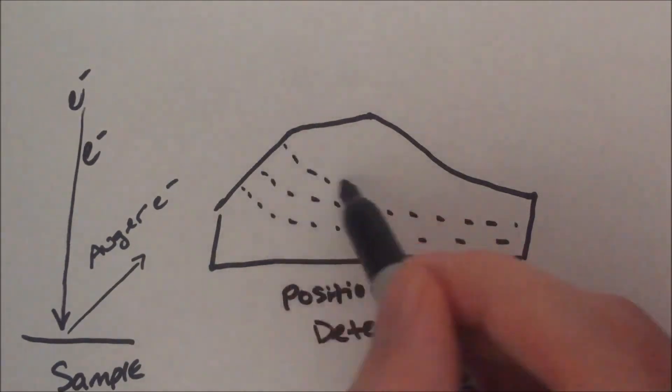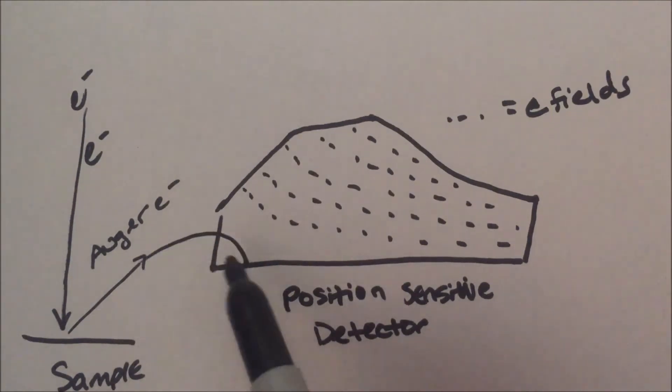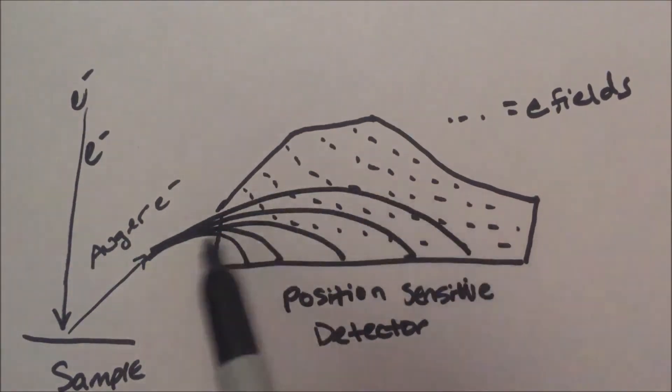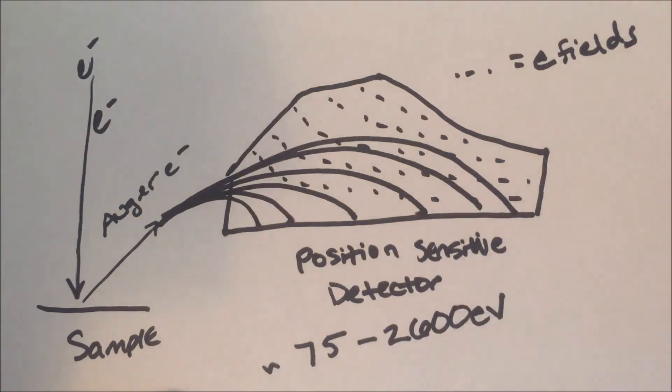Upon entering the detector, the Auger electrons are subject to a hyperbolic electric field, allowing them to travel different distances depending on their kinetic energy. In this way, an Auger spectrum can be obtained at each point of the SEM image.